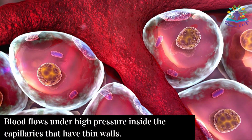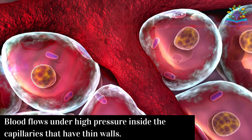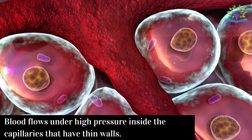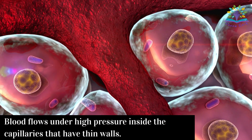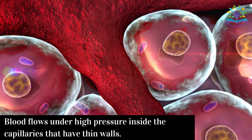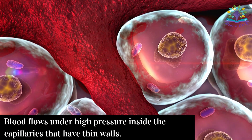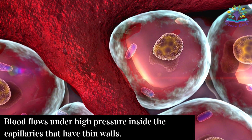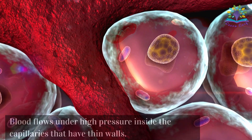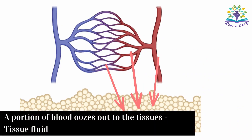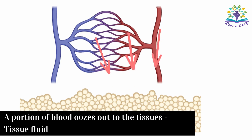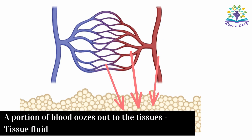Capillaries have very thin walls, and when blood flows through them under high pressure, some portion of the blood oozes out to the tissues, filling the spaces between the cells. This fluid doesn't have RBC and platelets, and is known as tissue fluid or interstitial fluid.